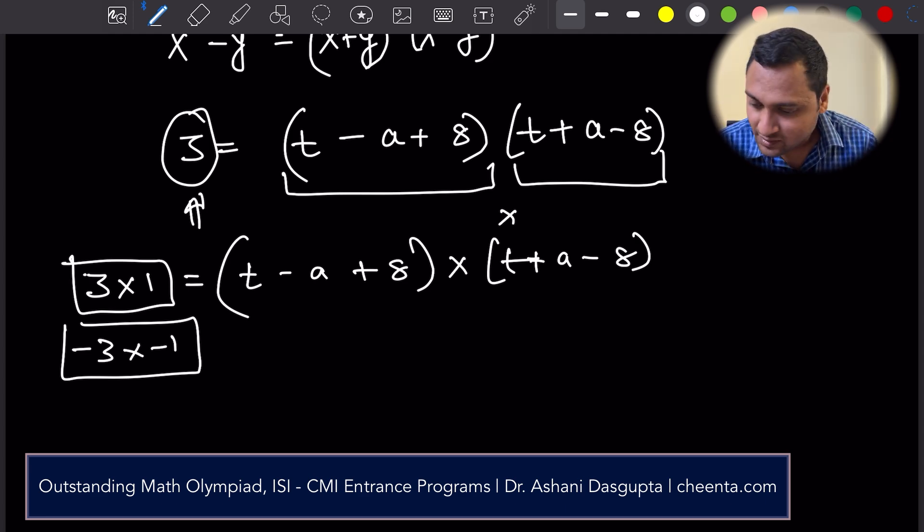Two numbers getting multiplied to positive 3. These are the only two ways. In fact, we can write four equations from this. What are the four equations?